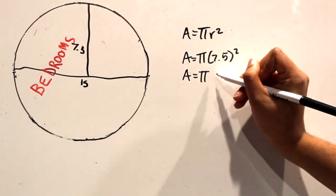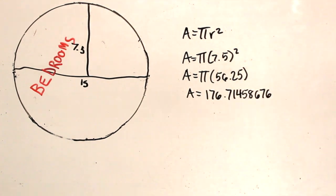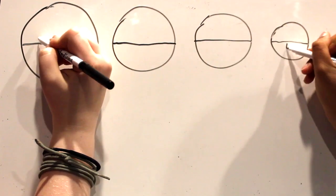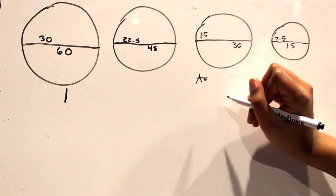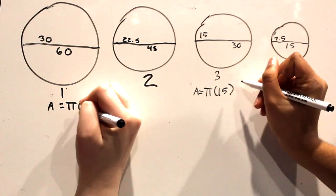Level 4 of the dome is just a bedroom. The area of the bedroom is about 177 feet. We found the area of each space by using the formula for the area of a circle, and then dividing by the portion of the circle that the room takes up.